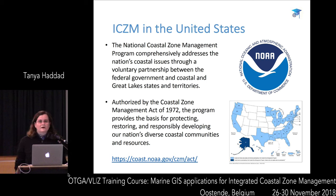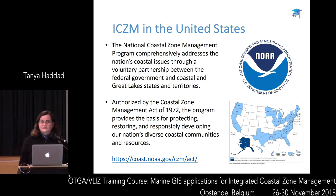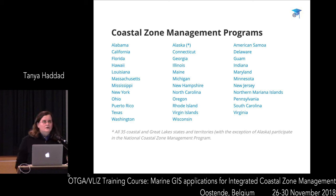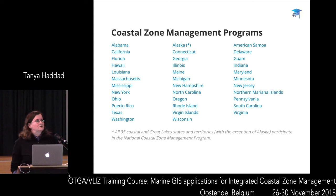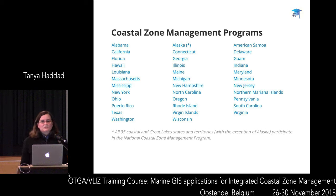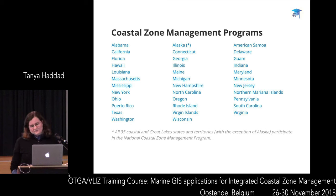The program is designed as a partnership between the federal government and state governments. It's a voluntary program — if a state doesn't want to participate, it doesn't have to. But there are two major incentives to participate, which mean that most states do. All 35 coastal United States, including territories and Great Lakes states, now participate — with the exception of Alaska, which pulled out several years ago due to disagreements with the federal government. They felt the positive incentives were not worth the negatives of participating.